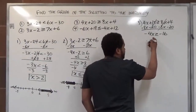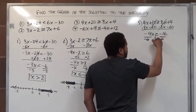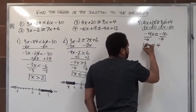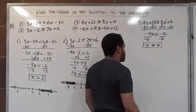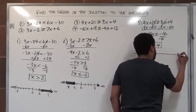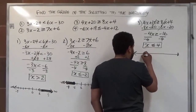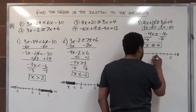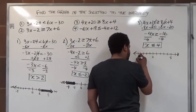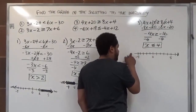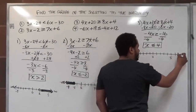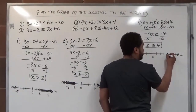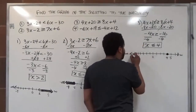Now we divide both sides by the coefficient of x, which is negative 4 — this again changes the direction of the arrow, so it now points left. We get x less than or equal to positive 4. On the number line with zero in the middle and tick marks at 1 through 6 and negative 1 through negative 6, we go to positive 4, which is right here, and shade everything to the left including positive 4, going to negative infinity.